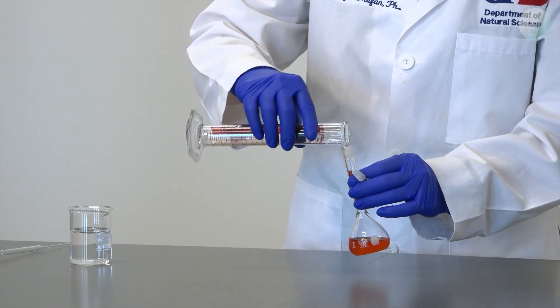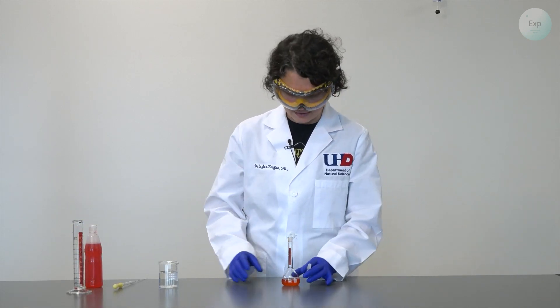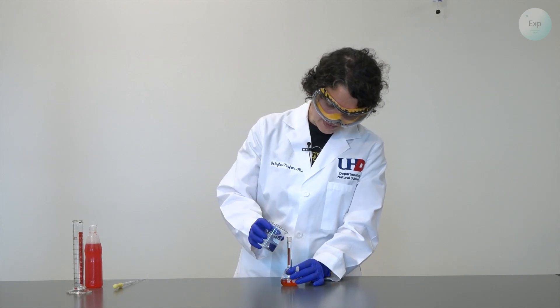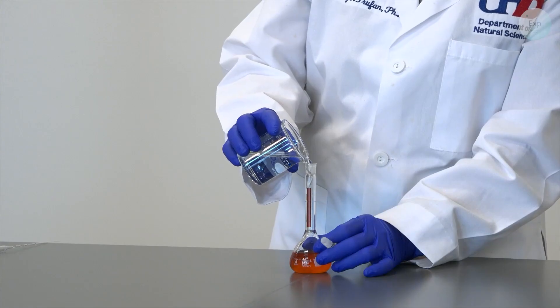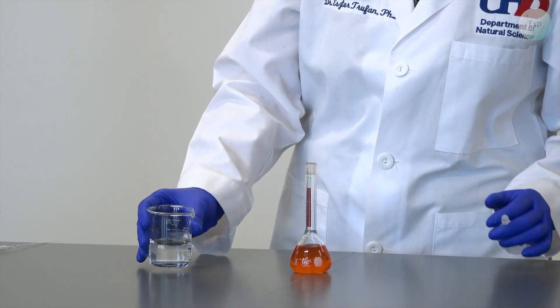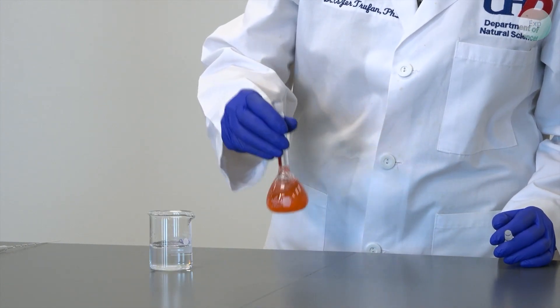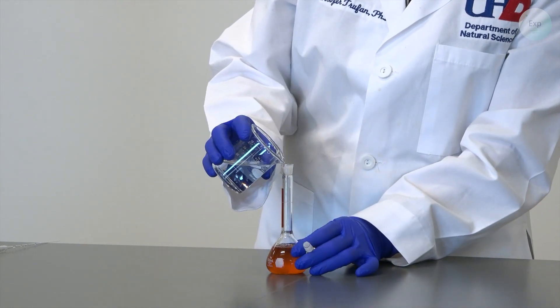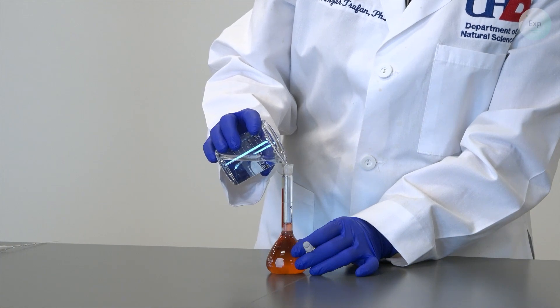And when our rinsing solution turns very clear that is a good sign for us that we are done with the rinsing. And for the rest we're simply going to add water into our volumetric flask. We occasionally swirl. And then we make sure to add enough water to get to the mark.